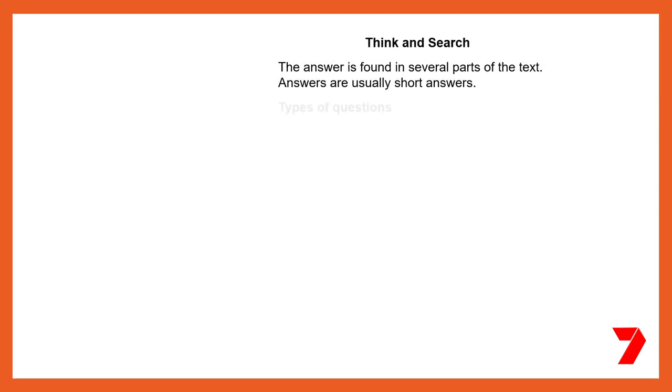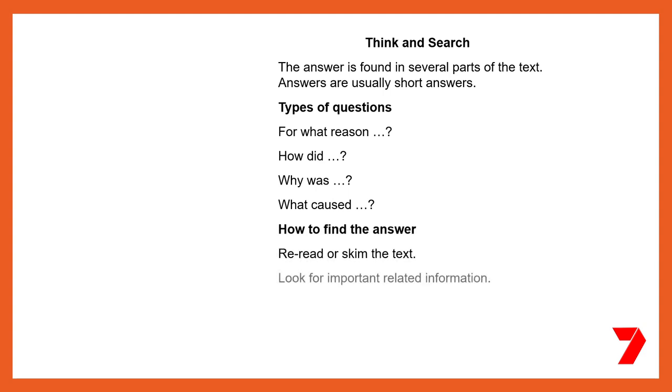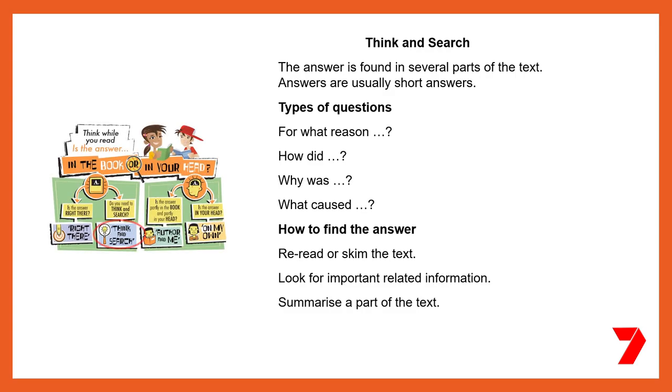You can find the answer by re-reading or scanning the text for keywords that will probably be in both the question and the text. Answers to 'think and search' questions are normally found across several parts of the text. To answer these questions, re-read or scan the text to look for related ideas and information. You may even need to summarise your answer using different parts of the text. Some questions need information that is not in the text — 'in my head' levels of questioning answer inferential questions, requiring you to read between the lines.